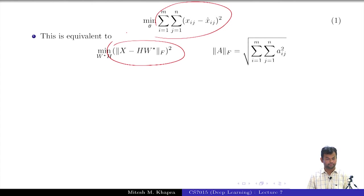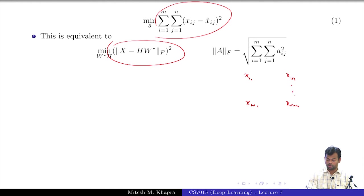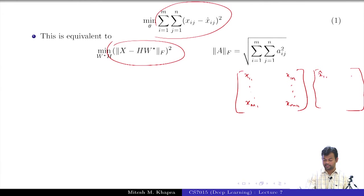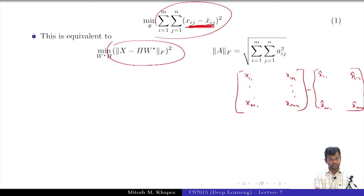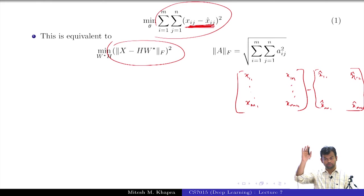What is the Frobenius norm of a matrix? It is the sum of the squares of the elements. Now, the matrix X has elements x_11 up to x_mn. The matrix HW-star is x-hat. I take the difference between these two — every element of that matrix equals the individual squared error term. Taking the square of every element and adding them up gives the Frobenius norm. So this sum is equal to the Frobenius norm.